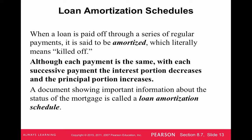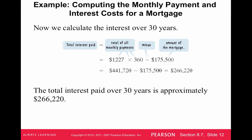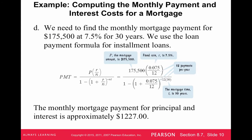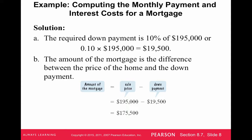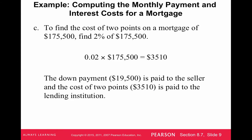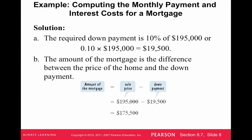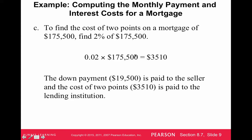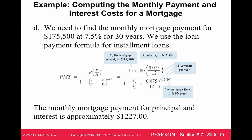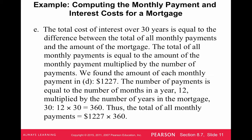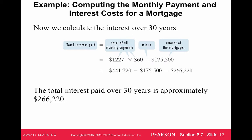To summarize what you'll be asked: figure out the down payment, the mortgage amount (which is always the selling price minus the down payment), any points, the monthly payment, and the total interest.